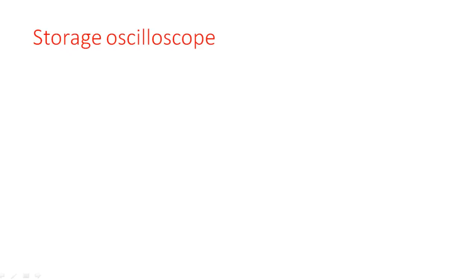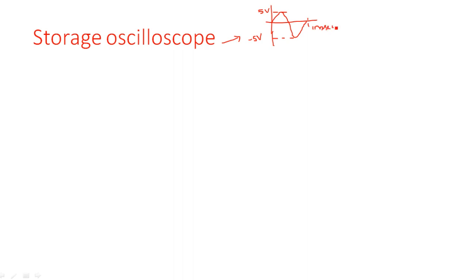Hi everyone. In this video I am going to explain about the storage oscilloscope. A storage oscilloscope is used to store whatever signal is going to be displayed. For example, if I am displaying a sinusoidal signal with 5 volts on the positive side and minus 5 volts on the negative side with a time period of one millisecond, when the input is there the CRO screen displays it — a normal oscilloscope can do that.